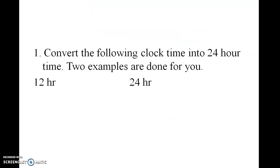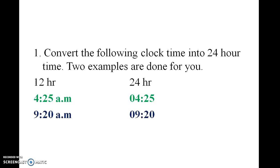Convert the following clock times into 24-hour time. Two examples are done for you. 4:25 AM is 4 hours 25 minutes. 9:20 AM is 9 hours 20 minutes. 6:30 PM is 18 hours 30 minutes.